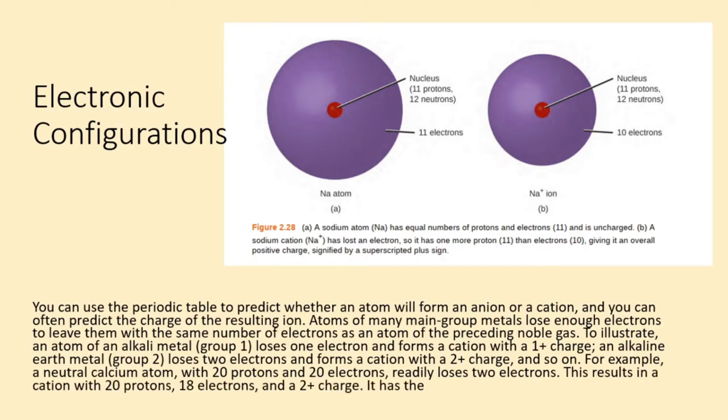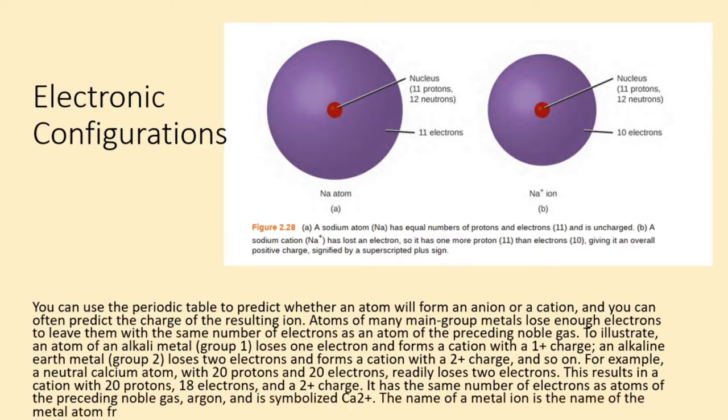For example, a neutral calcium atom, with 20 protons and 20 electrons, readily loses two electrons. This results in a cation with 20 protons, 18 electrons, and a 2+ charge. It has the same number of electrons as atoms of the preceding noble gas, argon, and is symbolized Ca2+. The name of a metal ion is the name of the metal atom from which it forms, so Ca2+ is called a calcium ion.